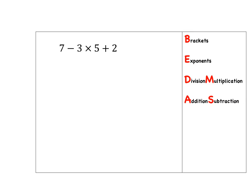Here's our first one: 7 minus 3 times 5 plus 2. BEDMAS tells us to first look for brackets — there aren't any. Then exponents — there aren't any. After that, we look for division or multiplication. We can see quite clearly that we have a multiplication to do, so I find it useful to just underline it so I'm very clear on what I'm dealing with at every stage.